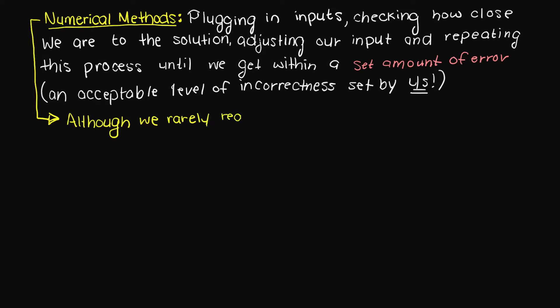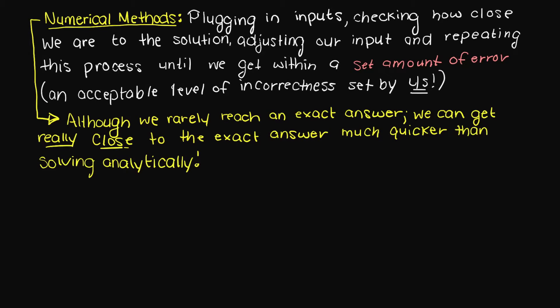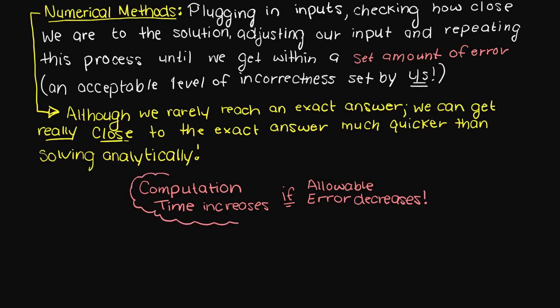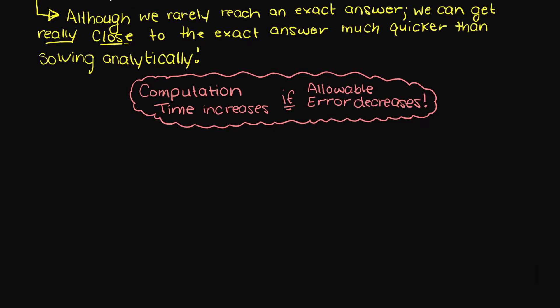So numerical methods never allow us to reach an exact answer like analytical solutions could, but they can get us as close as we desire. We are just trading off computation time, how long our computer takes to plug in as many numbers as it needs, versus accuracy, how close we are to the solution of the problem.